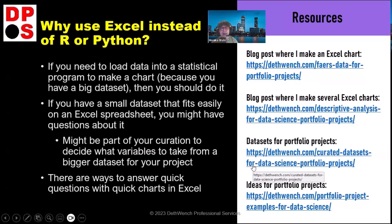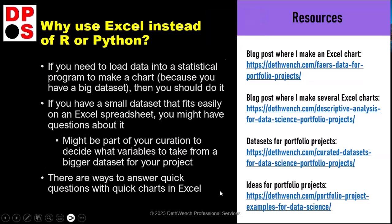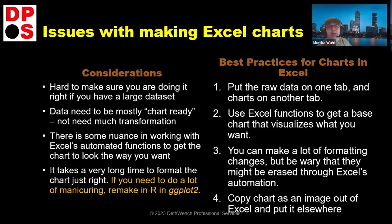It might be part of your data curation process — like reducing the cardinality, the number of levels in a categorical variable. You might just be dealing with classifications on your main data. This is a good way to answer quick questions. Make sure you download these slides, because then you can get all the links.